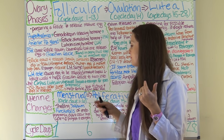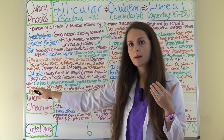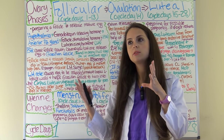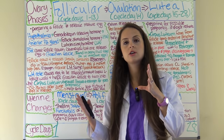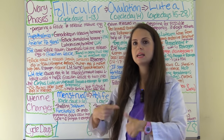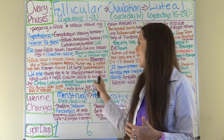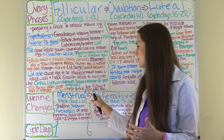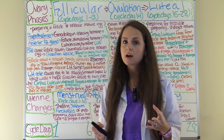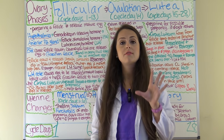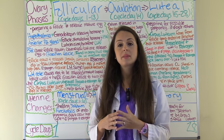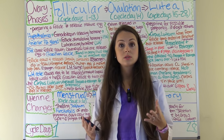The LH surge typically happens days 11 through 13, and then the egg is released. Sperm, if present, can live in the reproductive tract in ideal conditions up to five days — so it can be waiting until that egg is released.